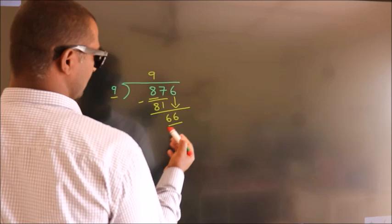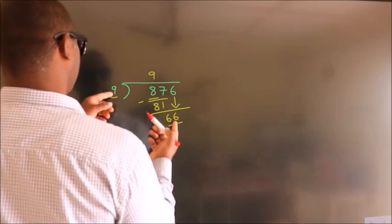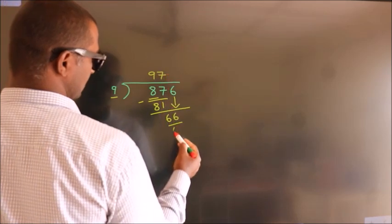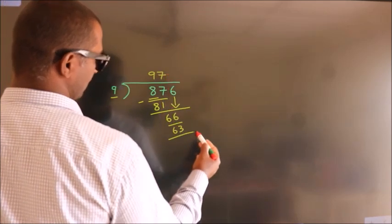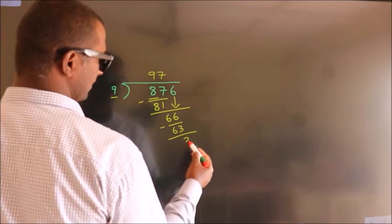So 66. A number close to 66 in the 9 table is 9 sevens, 63. Now we subtract and get 3.